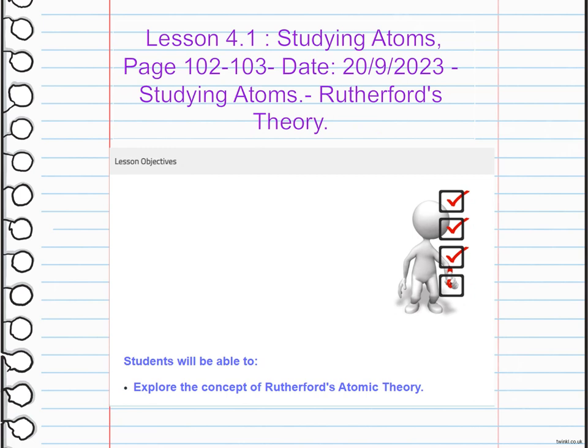Rutherford's atomic theory, proposed by Ernest Rutherford in the early 20th century, introduced the concept of the atomic nucleus. He conducted his famous gold foil experiment, where he observed that most of the alpha particles passed through the foil, but a small percentage were deflected or bounced back.